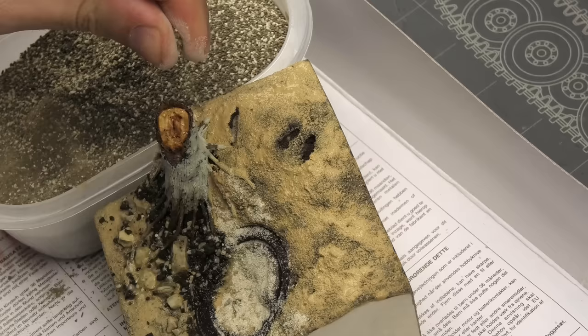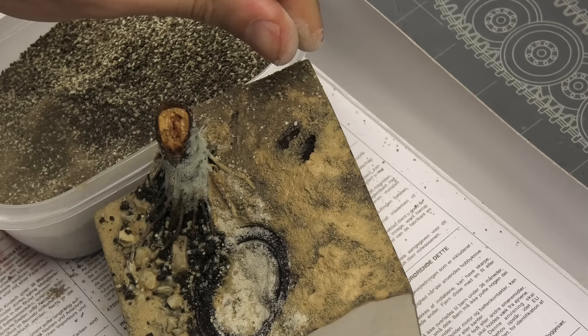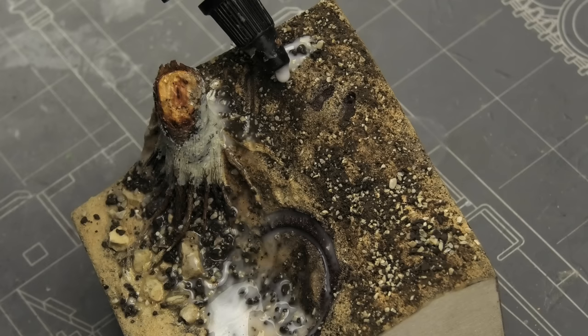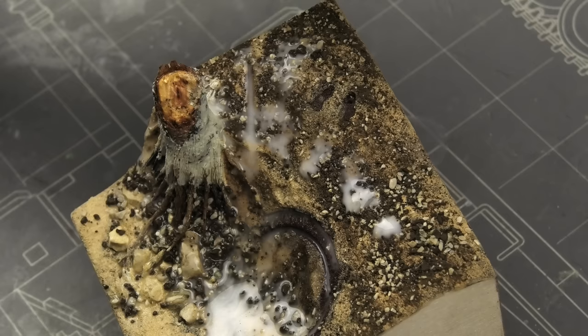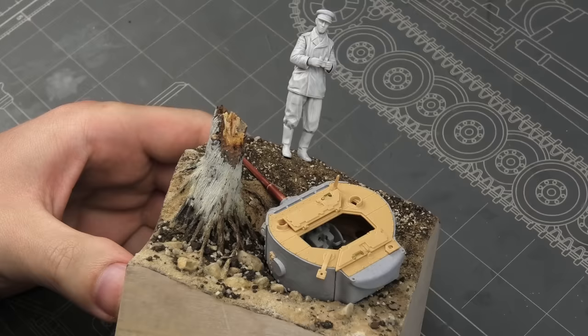The upper section looks like ordinary groundwork, so real earth from my garden was applied instead of fine sand. I repeated the same procedure with alcohol and PVA glue, and because the entire base was completely soaked from top to bottom, I left it to dry overnight.